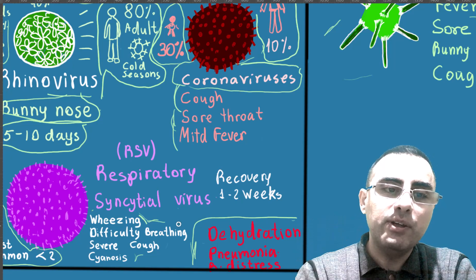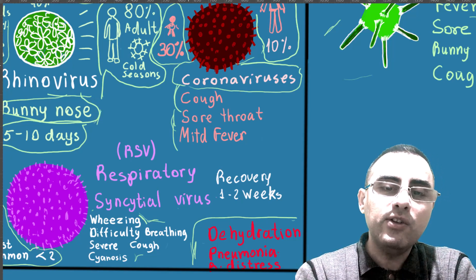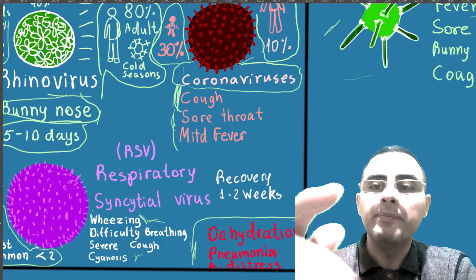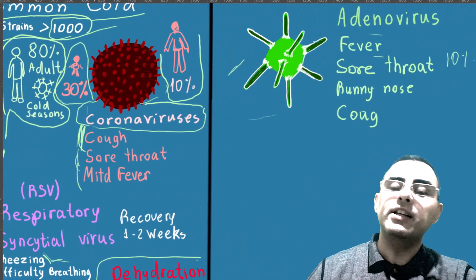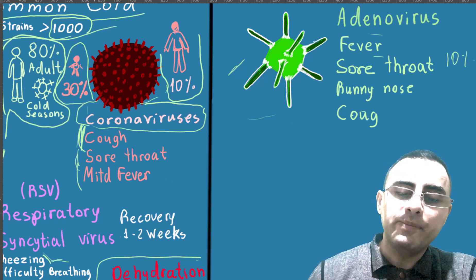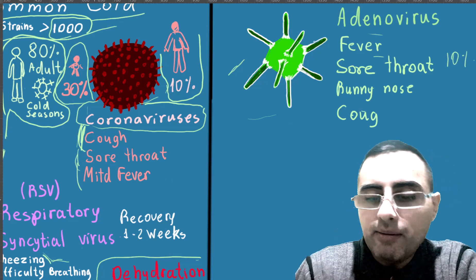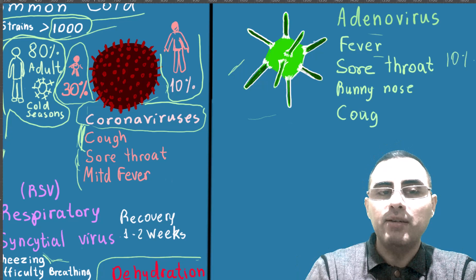To recap the hallmark symptoms: for rhinovirus it was runny nose, for coronavirus it was cough and sore throat, and for respiratory syncytial virus it is wheezing. Adenovirus is also an important and common virus which can cause the common cold. Thank you for your interest. If you like my video, please give a thumbs up. If you like my channel, please subscribe.